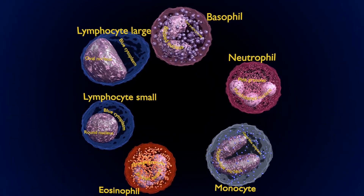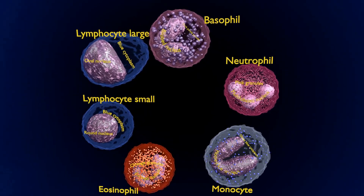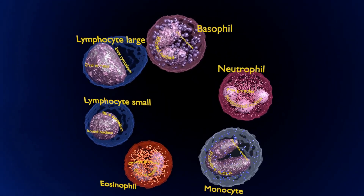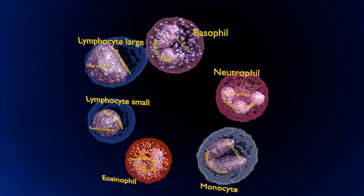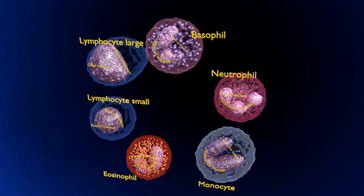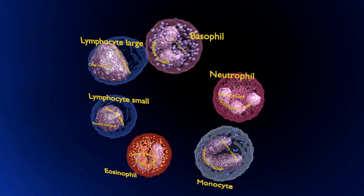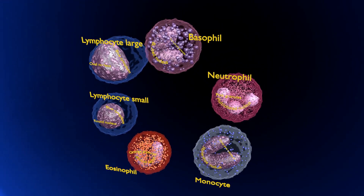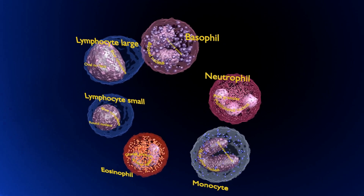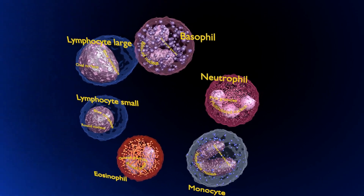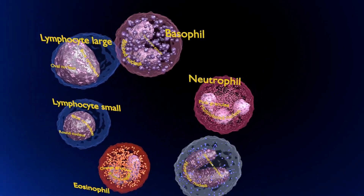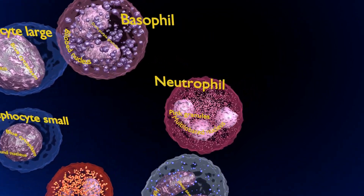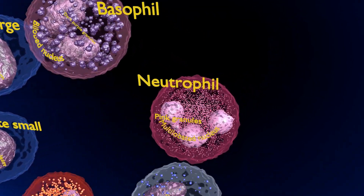WBCs or white blood cells are also known as leukocytes. Leukocytes are the cells of the immune system that are involved in protecting the body against both infectious diseases and foreign invaders. All leukocytes are produced and derived from multipotent cells in the bone marrow, known as hematopoietic stem cells. Leukocytes are found throughout the body, including the blood and the lymphatic system.